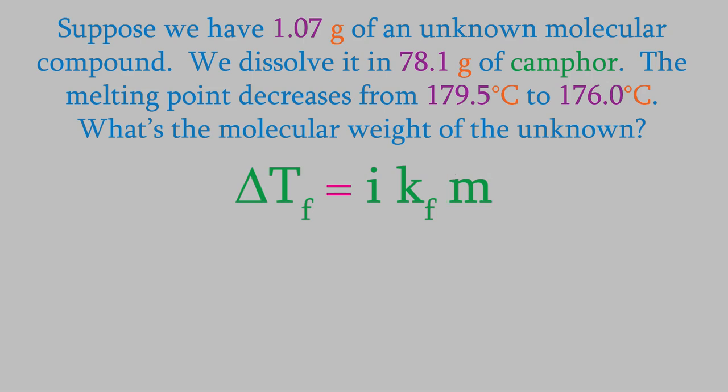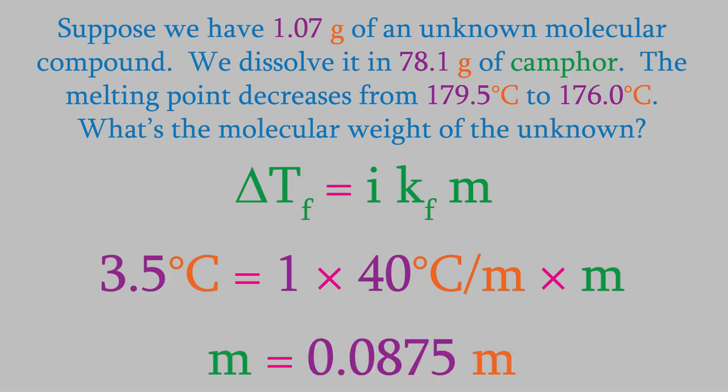Delta Tf is the change in the freezing point, which is 3.5 degrees. What about the van't Hoff factor? We don't know what the solute is, but the question tells us it's a molecular compound. If you watched earlier videos, you know that this means our compound doesn't break up into ions, so the van't Hoff factor is 1. If we look up the value of Kf for camphor, we find out that it's 40 degrees C per molal. So, we'll plug all these values into our equation and solve for m the molality. That gives us a molality of 0.0875. But that's not our answer yet.